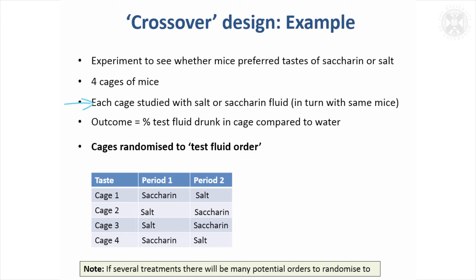The key thing about a crossover study is you give the interventions in a random order — you don't always give saccharin first and salt second. You mix it up a bit just in case there are any biases due to order effects. Definitely think about the crossover design if you're going to give different interventions to an animal over time, and don't always do it in the same order.